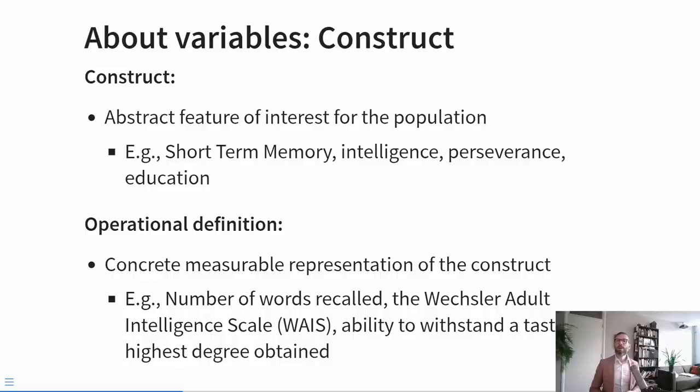As explained when I showed the tabular data, we typically want to measure different characteristics of our participants. With this in mind, it's useful to know what a construct is. A construct is an abstract feature that we intend to measure. For example, short-term memory is a construct in neuroscience, intelligence is a construct in psychology, perseverance is another psychological construct, and education may be a sociological construct. Oftentimes we have to be more concrete when we want to measure an abstract construct, and that's where the operational definition comes in — a concrete way to measure an abstract construct.